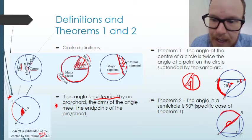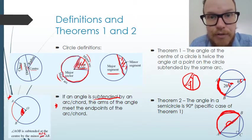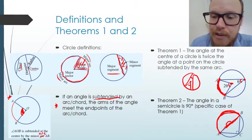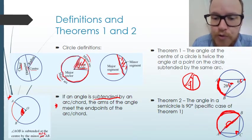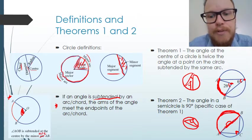Arc AB is subtended by the angle at the centre and also by the angle on the edge of the circle. Because the angle at the centre is 180 degrees, the angle on the edge is half of that — 90 degrees. So angle ACB is 90 degrees. We can draw this as a coded reason showing the triangle with a right angle.